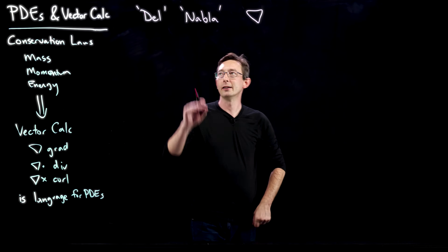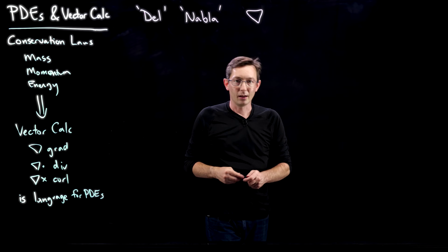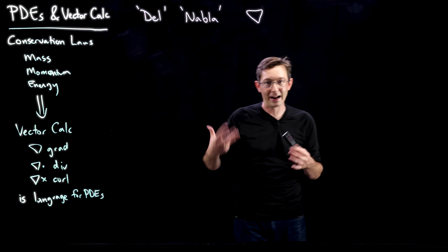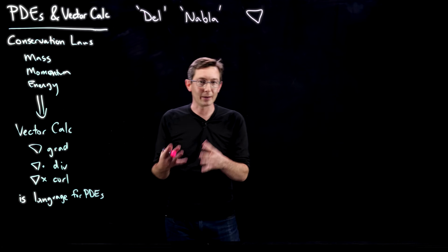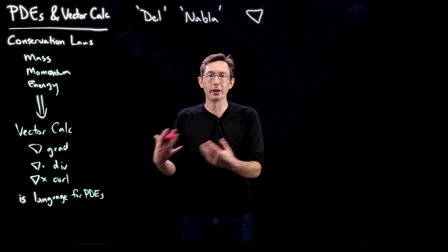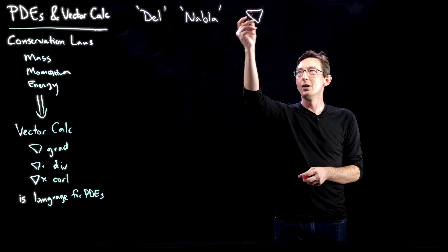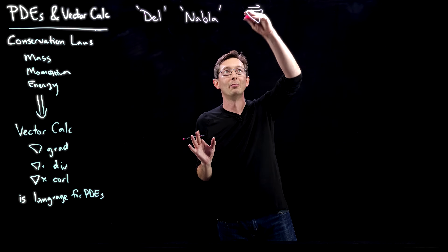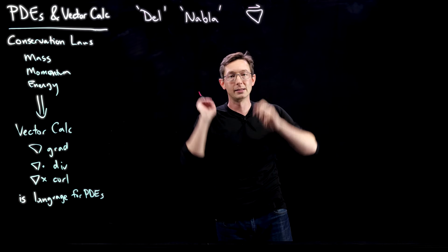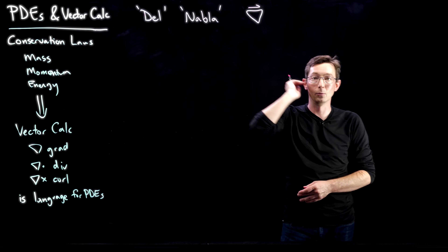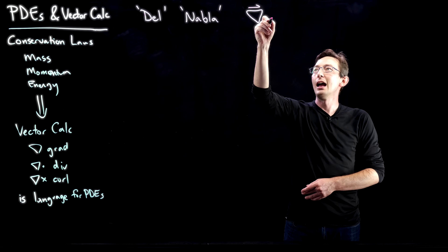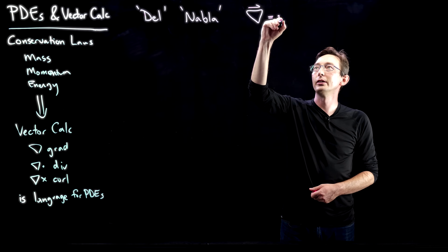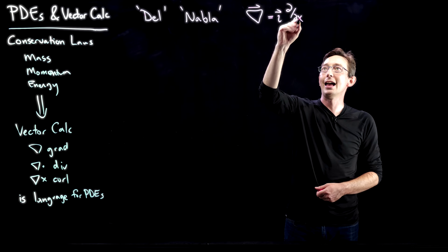Del or nabla is literally defined as a kind of vector of partial derivatives. We're going to think about taking the derivative of something as an operator or an operation. You could put a little arrow over this — sometimes I do, sometimes I don't — but if I drop this arrow it always means the same thing. In three dimensions, this del operator is going to be partial/∂x in the i direction plus partial/∂y in the j direction.